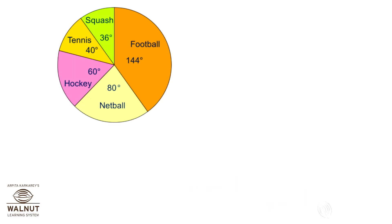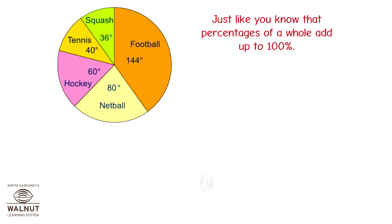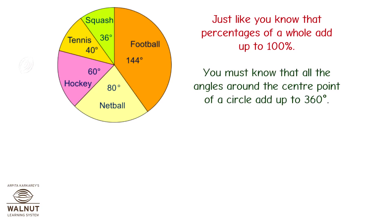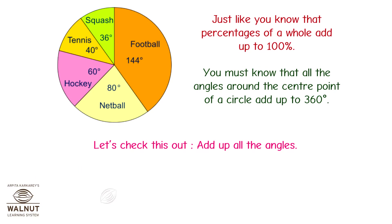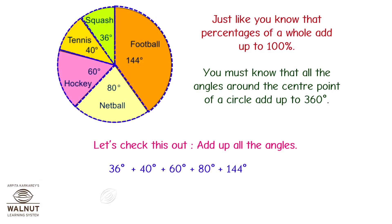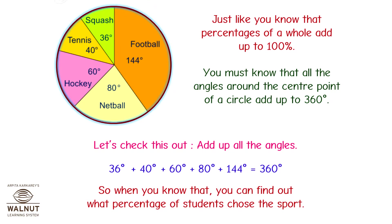Look at this pie chart — it shows the number of students and the sport they have chosen. It is not given in percentages; it is in angles. What if you don't have percentages in a pie chart but have angles instead? No problem — we can still find out all the information we need. Just like percentages of a whole add up to 100%, all the angles around the centre point of a circle add up to 360 degrees. Adding up all the angles: 36 plus 40 plus 60 plus 80 plus 144 degrees equals 360 degrees. So you can find out what percentage of students chose each sport.